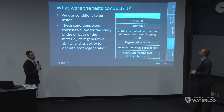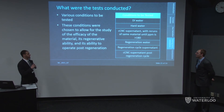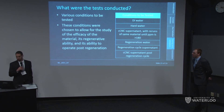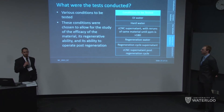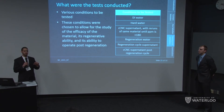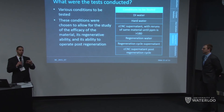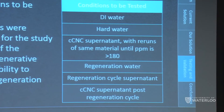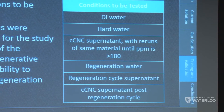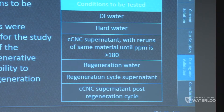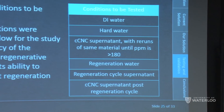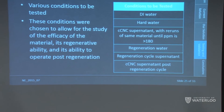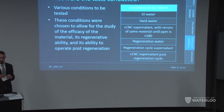Now that we could quantify results, we ran different conditions: DI water, hard water, and the supernatant from CNC tests. We repeated tests using the same CNCs until the supernatant PPM level exceeded 108, at which point we would regenerate the CNCs. We also tested the regeneration water before and after the regeneration cycle, and retested the material to confirm it could be regenerated and reused.